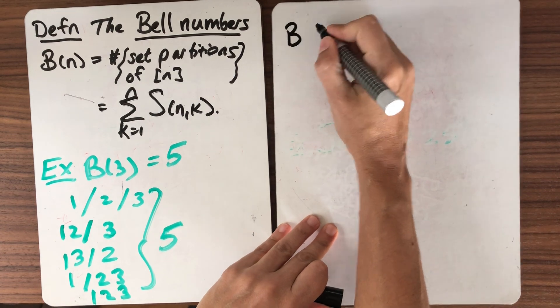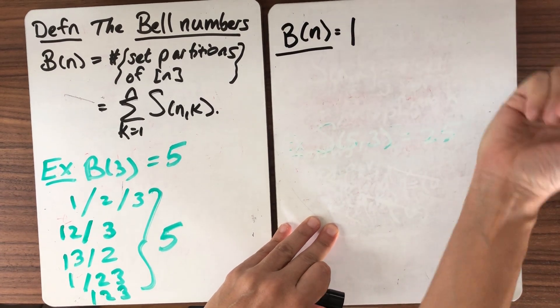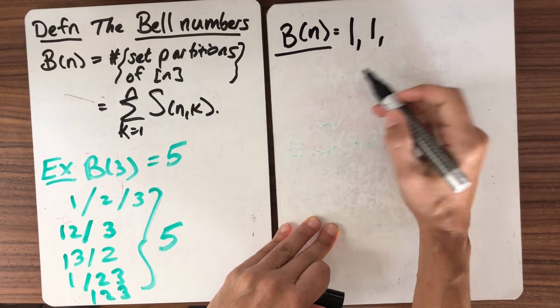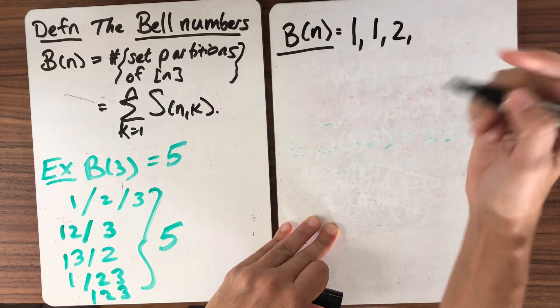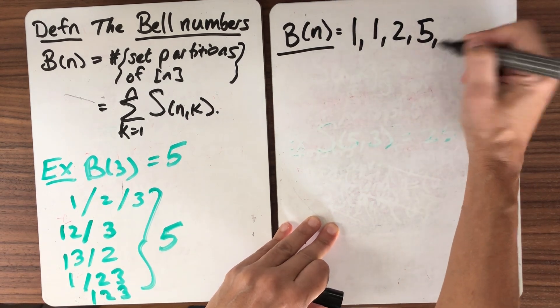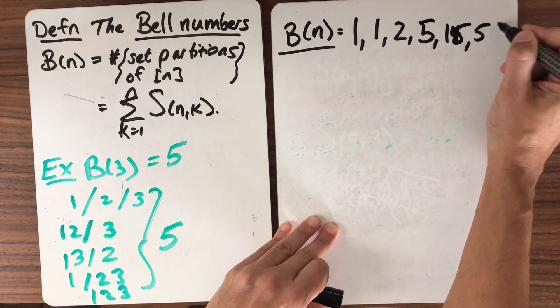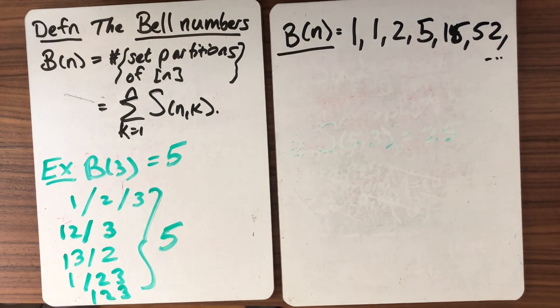Well, let's write down some data first. So if we just want to compute B(n) for a few values of n, what do we get? Well, there's one way to do nothing. If n is 1, there's one way to set partition. When n is 2, that's also pretty easy to see. You can put the numbers together or separate. When n is 3, we've just computed it. It's 5. And I'll tell you the next number is 15. And then 52, and then they continue to grow. And we want to get a sense of how these things grow.